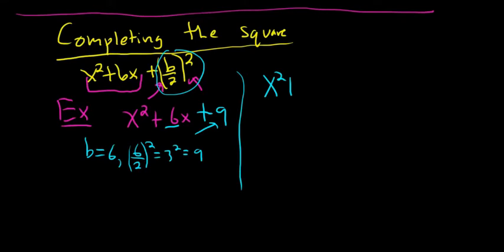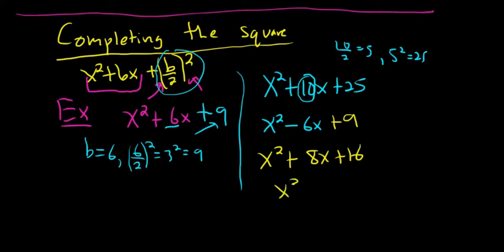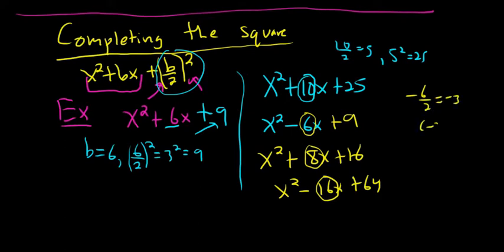Let's do a few more examples. For x squared plus 10x: 10 over 2 is 5, and 5 squared is 25, so you add plus 25. For x squared minus 6x: negative 6 over 2 is negative 3, and negative 3 squared is 9. For x squared plus 8x: 8 over 2 is 4, and 4 squared is 16. For x squared minus 16x: negative 16 over 2 is negative 8, and negative 8 squared is 64. In each case, take the coefficient, divide by 2, and square it.